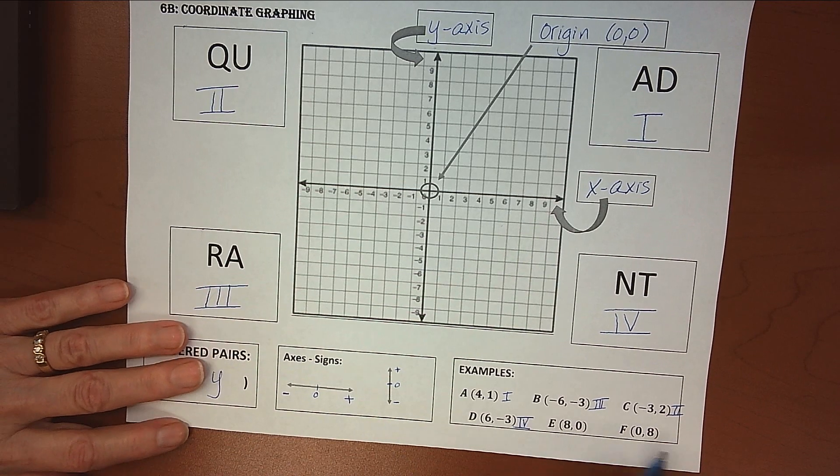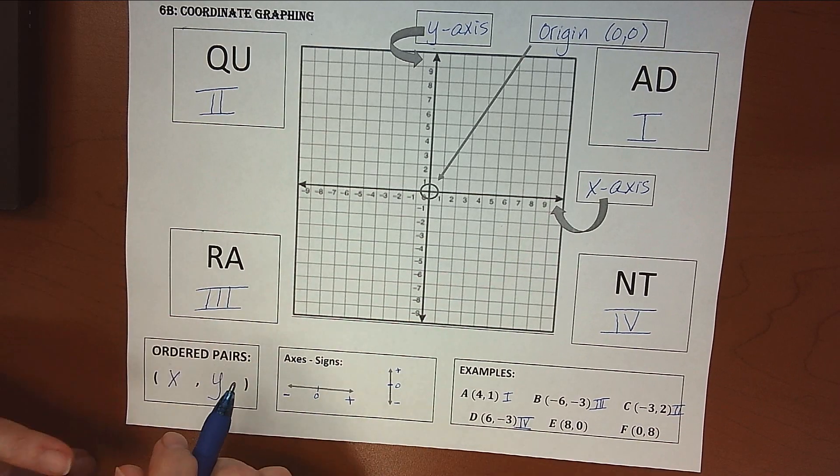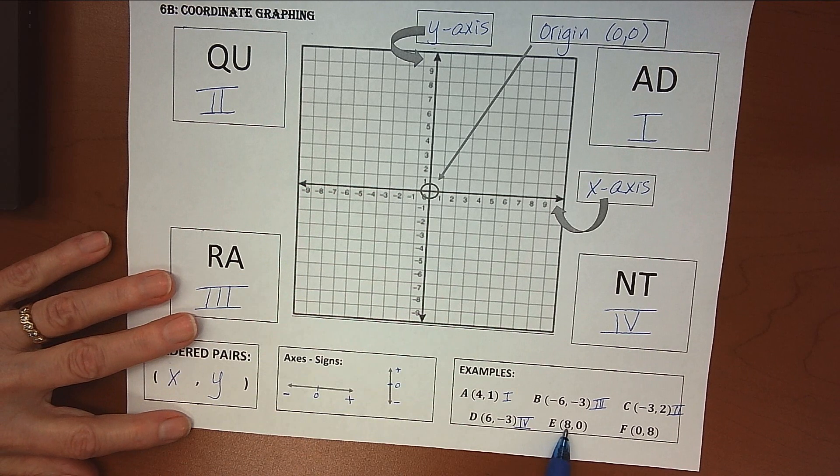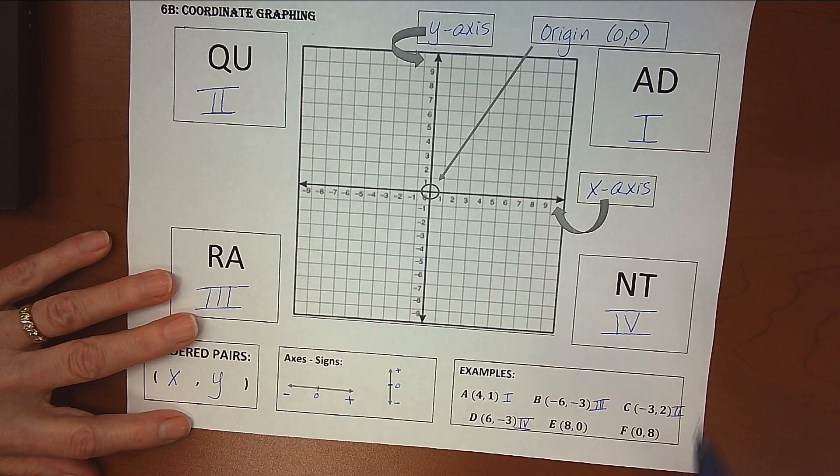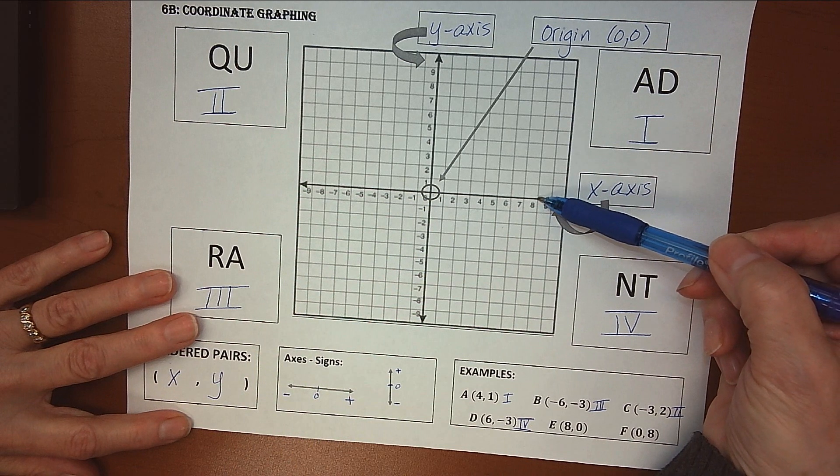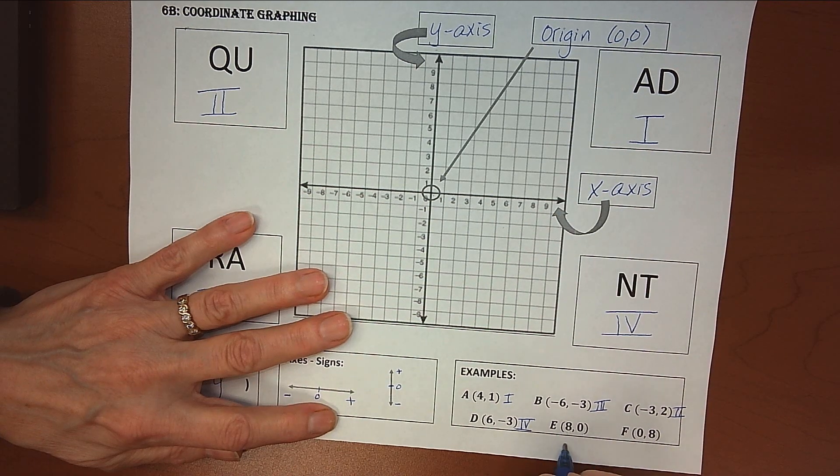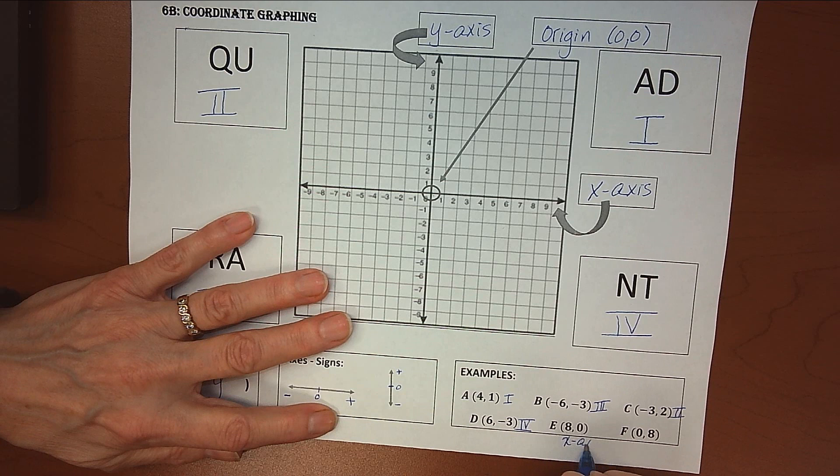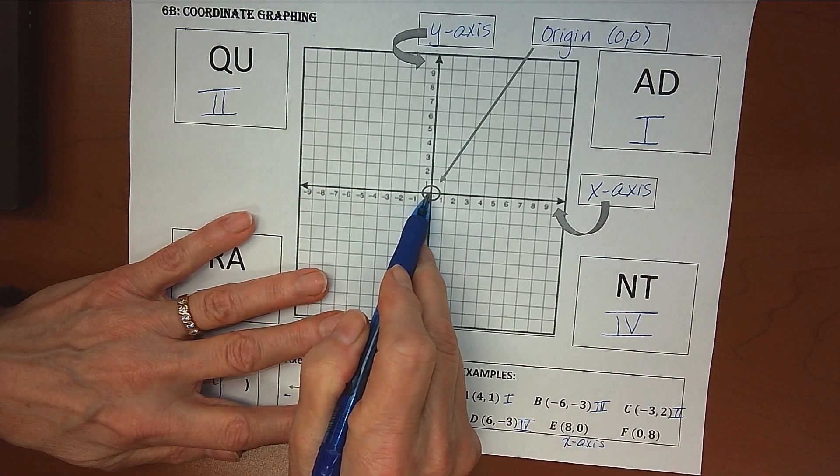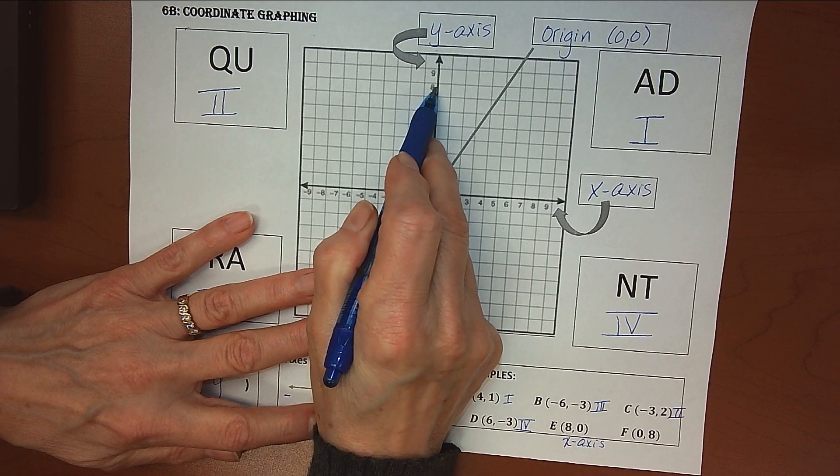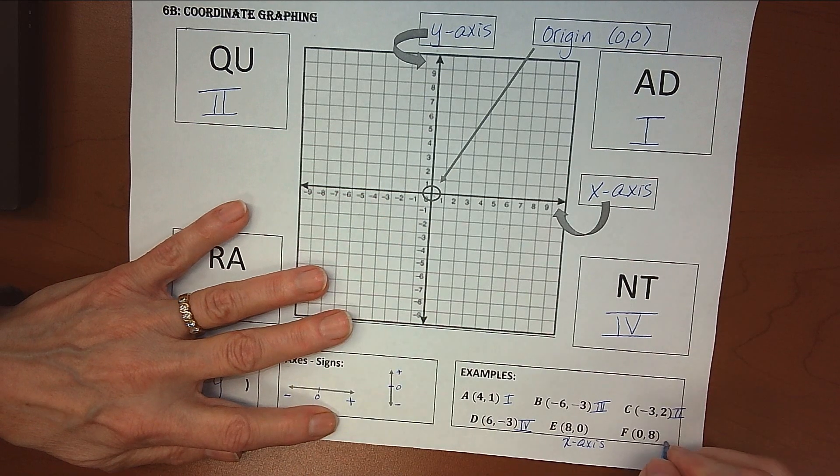And finally, the last two here that don't fall into any quadrant at all, we go right to left 8, so we're going to go right 8, but then we don't go up or down at all, and so we're right here, right on the x-axis. So that point is on the x-axis. And then 0, 8 tells us that we don't move right or left at all, but then we go up 8, and so that one falls right on the y-axis.